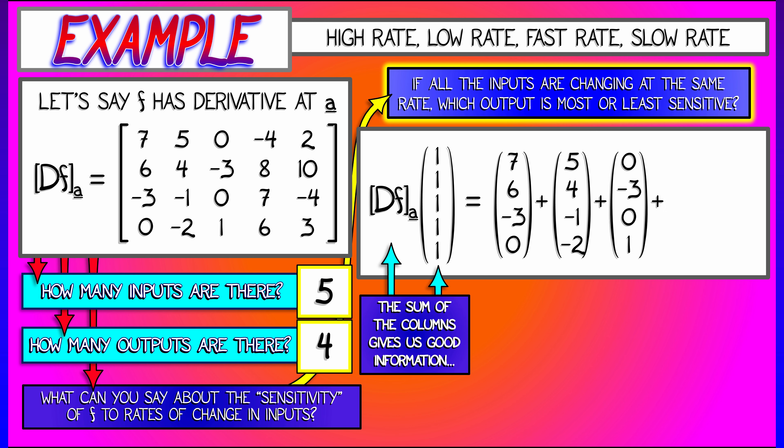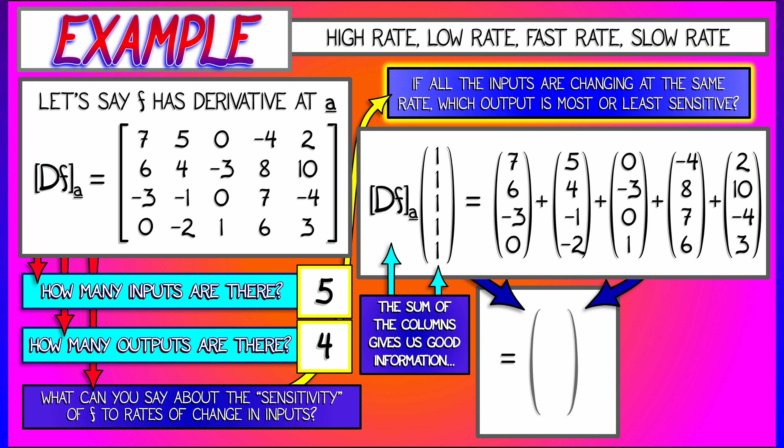But what does that mean? That means that when we compute this, when we get those numerical values, negative 4, 25, negative 1, 8, that tells us which outputs are most sensitive, which outputs are least sensitive.